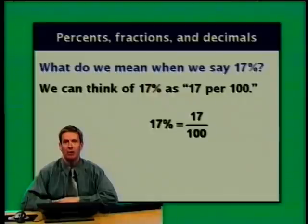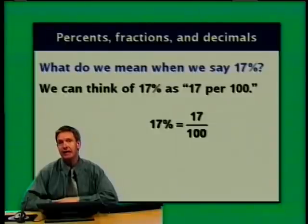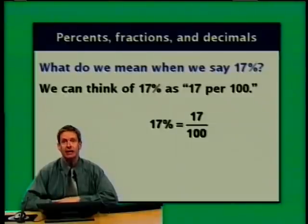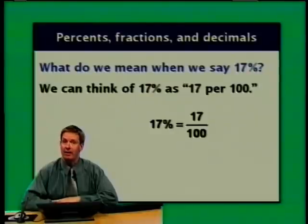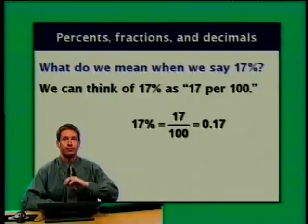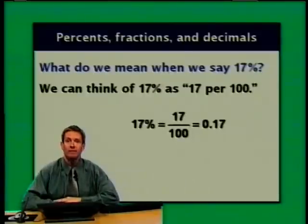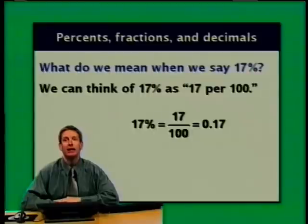17 parts out of 100. When we take that 17 in the numerator and divide by 100, the net result is that the decimal point, rather than falling after the 7, gets moved two places to the left. So 17%, which equals 17 out of 100, or 17 one-hundredths, also equals 0.17.